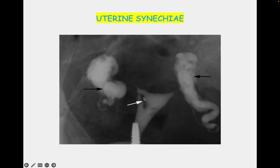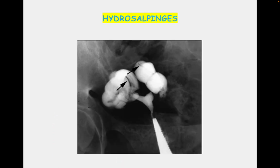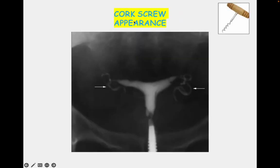Another picture shows uterine synechiae. This picture shows hydrosalpinges — you can see the dilated, crowded, coiled tubes, which is suggestive of hydrosalpinges. This radiograph shows the corkscrew appearance of the tubes, which is characteristically seen in patients with tuberculosis.